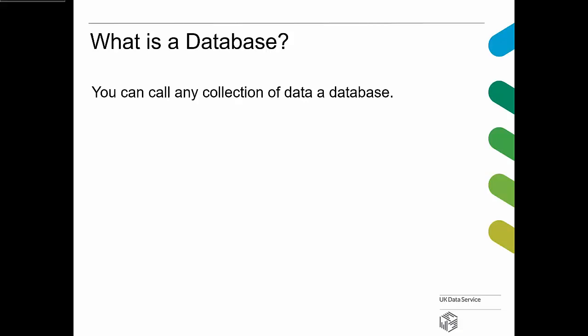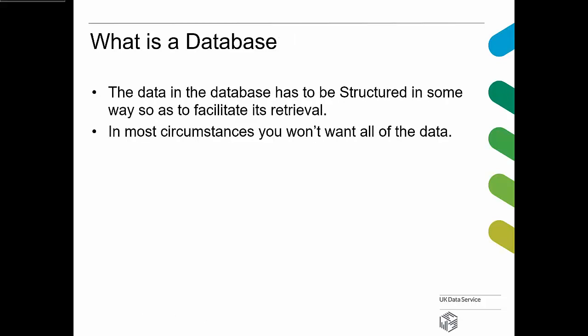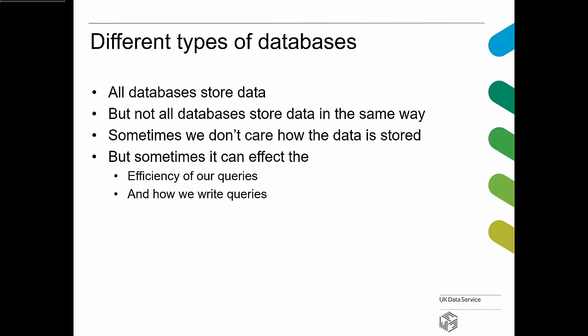So, what is a database? Any collection of data, you can call it a database. But one of the things about a database is it has to be structured in some way so as to facilitate the retrieval of the data in it. You've got to be careful how you put the data in to make it easy to take the data out. In most cases, you won't want all of the data — you might only want a very small part of it. There are different types of databases, but they all essentially do the same thing: store data in such a way as to make it easy to retrieve.